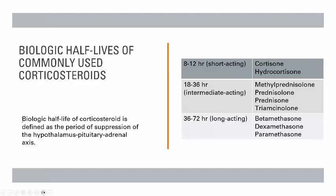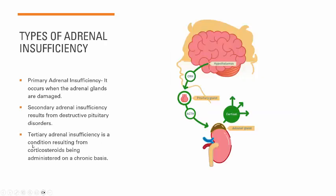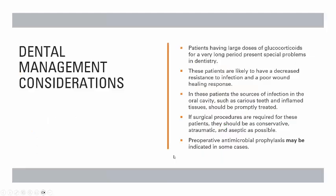The biological half-life of a corticosteroid is defined as the period of suppression of the hypothalamus-pituitary-adrenal axis, which we have discussed already. There are three types of adrenal insufficiency: primary adrenal insufficiency occurs when the adrenal glands are damaged; secondary adrenal insufficiency results from destructive pituitary disorders; and tertiary adrenal insufficiency results from corticosteroids being administered on a chronic basis.